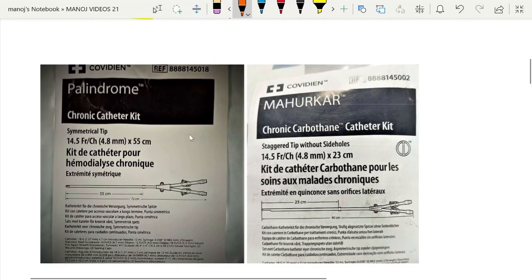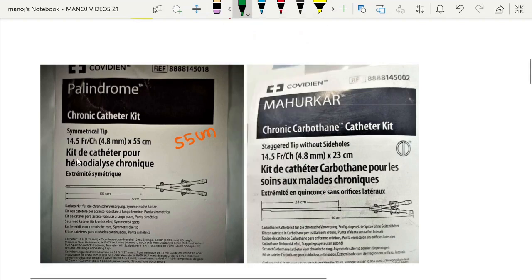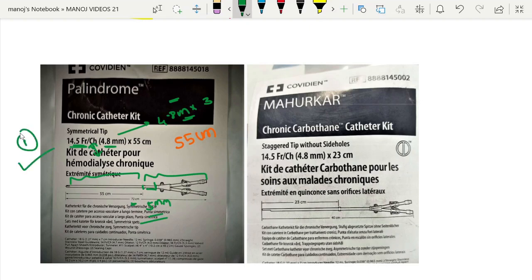First we start with the perm cath. This is the 55 cm perm cath. As we see here, 14 French or 4.8 mm. So if you put 4.8 mm into 3, we will get 14.5 French. It is mentioned as French or Charri as I discussed. This is 55 cm tip to cuff. From the cuff to the outer hub, it is usually 17 cm. So 55 plus 17, 72 cm. The distance between this cuff to this is usually 5 mm. So this is the 55 cm perm cath.